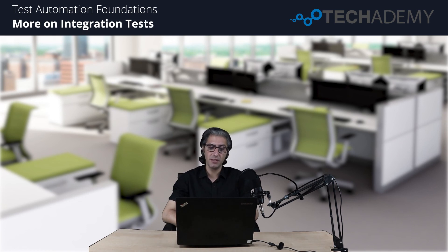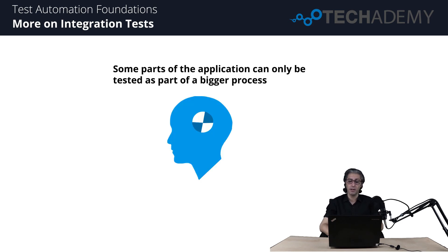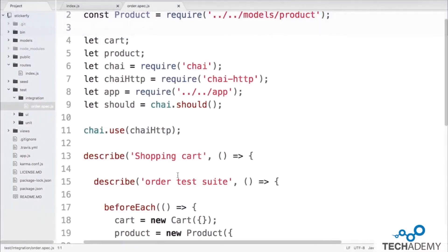Hello everyone and welcome back. Integration tests provide confidence that all parts of an application work together. While unit testing focuses on individual small parts, integration tests focus on the whole. They detect unexpected failures when one part of the application is fixed and another is broken. Not all units are purely unit-testable — some can only be tested as part of a bigger process. Let's look at an integration test for the Sticker Fry application in Atom, opening the file test/integration/order.spec.js.